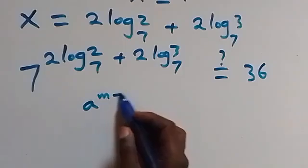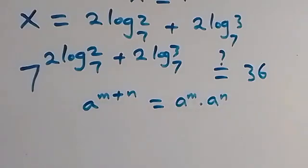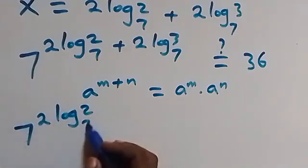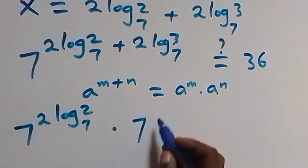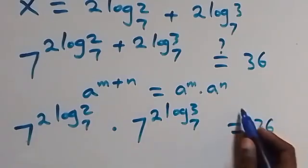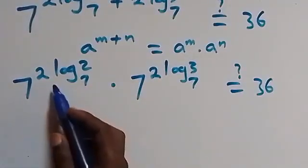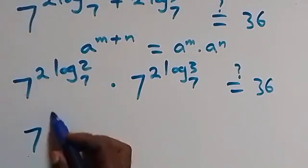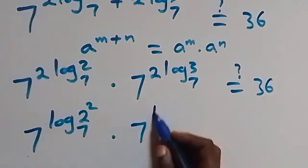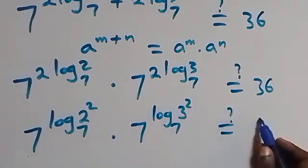Applying the law of indices, a raised to power (m plus n) equals a raised to power m times a raised to power n. We separate this and have 7 raised to power (2 log base 7 of 2) times 7 raised to power (2 log base 7 of 3) equals 36. Bringing the 2 back as an exponent of the argument, this becomes 7 raised to power (log base 7 of 2 squared) times 7 raised to power (log base 7 of 3 squared) equals 36.